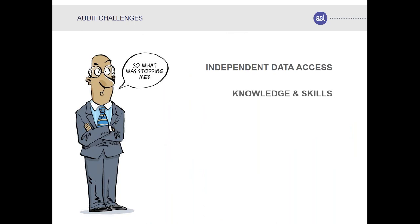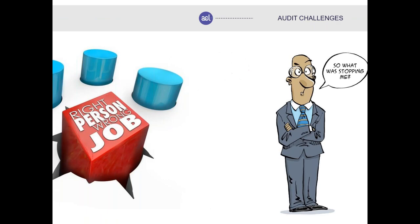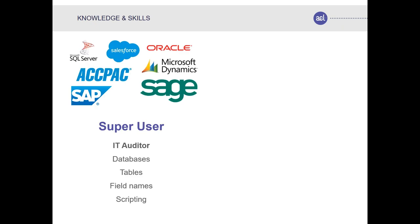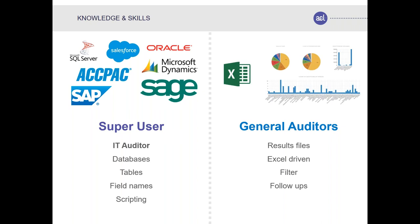The second challenge was the skills gap. Alan studied an audit or business degree — great for the job, but he was doing the wrong function. Audit now requires two skill sets: a super-user function that understands the organization's systems, databases, and tables where data is captured; and field auditors who just want results in Excel to filter and follow up on. The organization is audited through its ERP system, not on a manual basis, so auditors must be able to audit the systems. These two distinct roles represent increasing diversification required in an audit team.